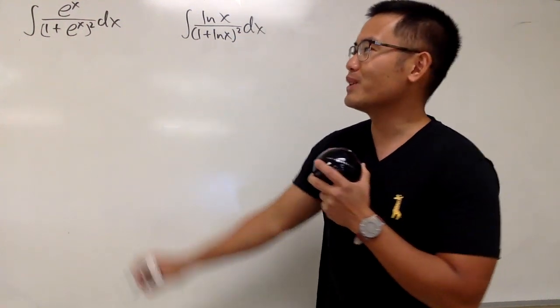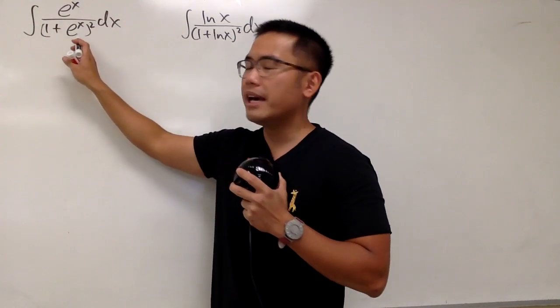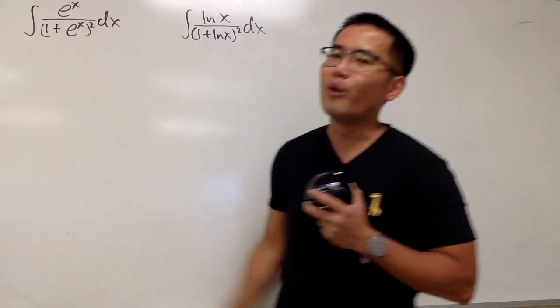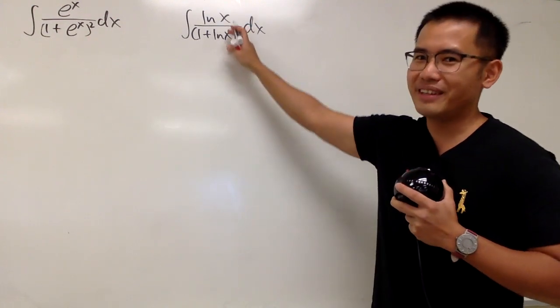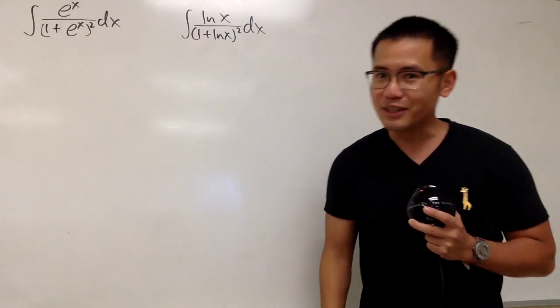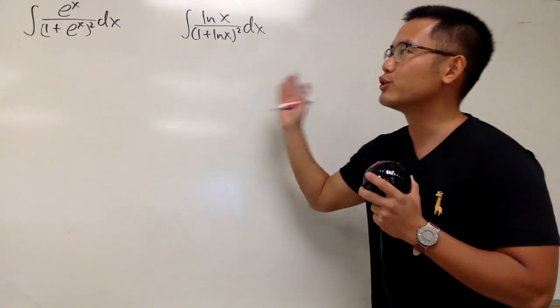Okay, well, two integrals on the spot. The first one is e to the x over 1 plus e to the x inside the parentheses, and then raised to the second power. And for the second one, instead of e to the x, we have natural log of x right here and right here. And as always, please pause the video and try them first.